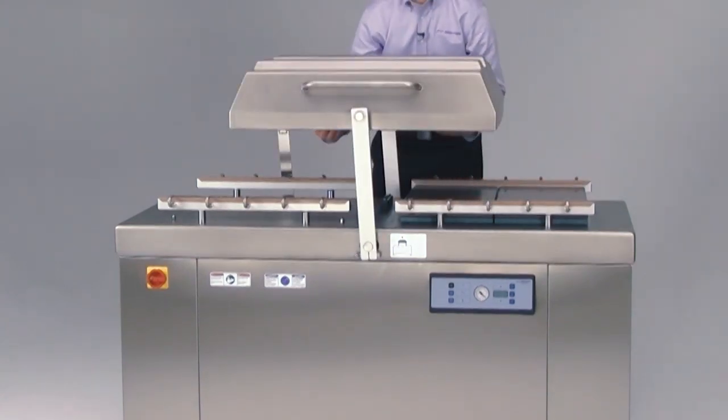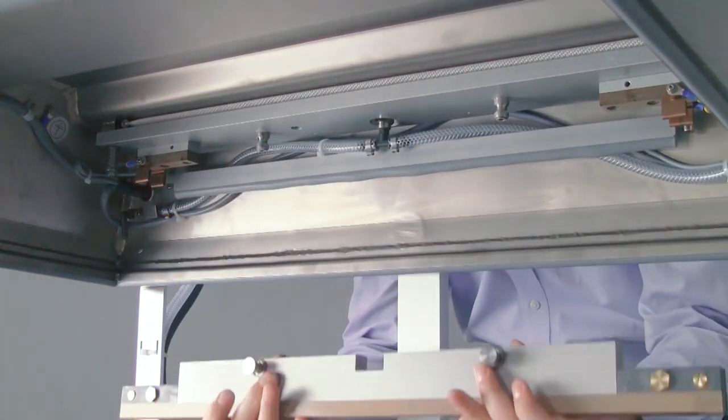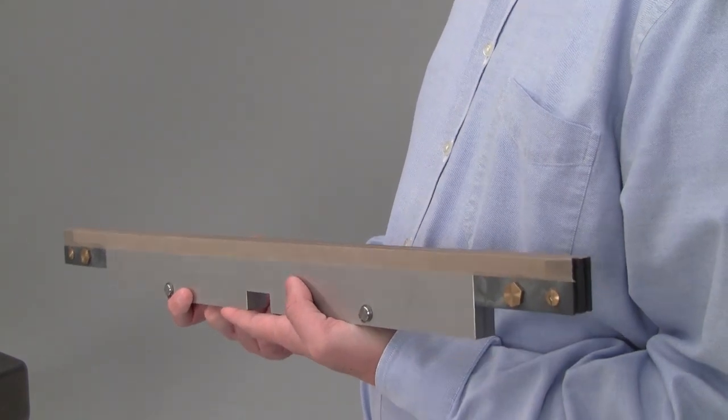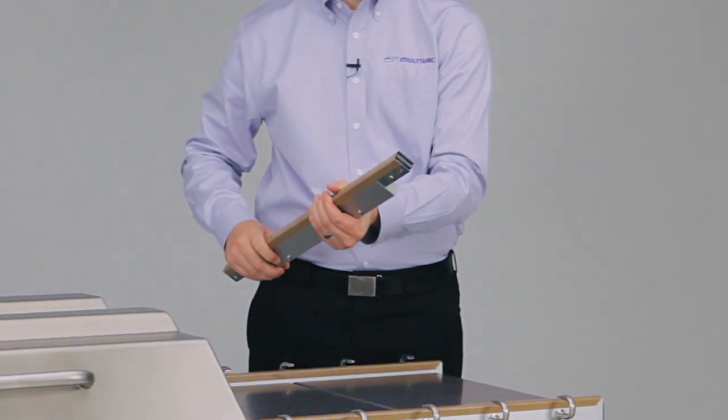The seal bars themselves still retain the ease of removal for easy maintenance. On all of the P600 configurations, the seal bar is made of anodized aluminum and retains the same quality of seal throughout the whole P-Series line.